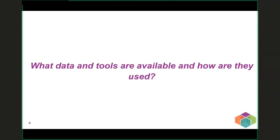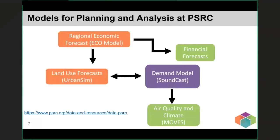Craig will now talk about our data and tools in greater detail. PSRC has numerous models and analytical tools developed to answer key policy questions. We have four main models that provide information for the Regional Transportation Plan: a regional economic forecast for population and jobs, UrbanSim for where people live and work, Soundcast for how they travel through their day, and the MOVES model for how travel behavior affects air quality. UrbanSim and Soundcast are integrated so that changes in transportation supply can affect housing choice and employment location.